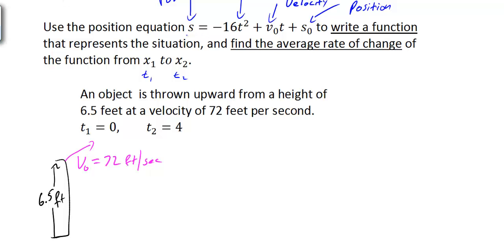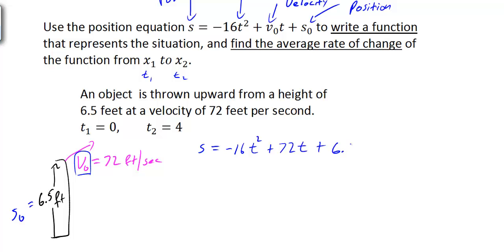If we plug this into the position formula, we have S equals negative 16t squared plus v sub 0—our initial velocity of 72—times t, plus s sub 0, which is our initial position of 6.5 feet. So the equation is S equals negative 16t squared plus 72t plus 6.5.